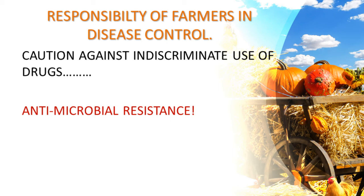Finally, the responsibility of farmers in disease control: this covers caution against indiscriminate use of drugs. There is a concept called antimicrobial resistance, which means that the wrong or indiscriminate use of antimicrobials or antibiotics can cause organisms to genetically modify and develop into what are called superbugs — organisms that are no longer affected by the drugs when those drugs are used on them later.